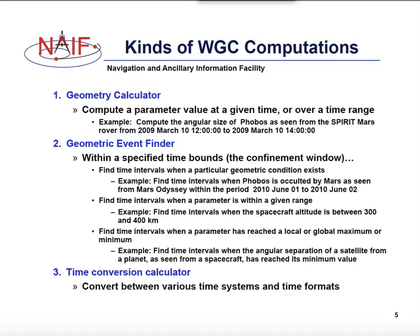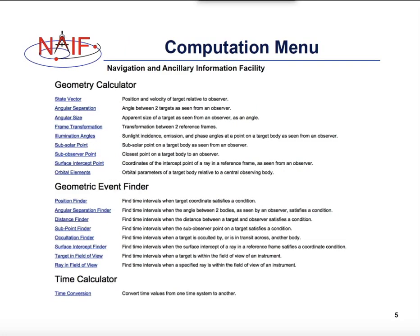WGC performs multiple kinds of computations that fall into three big categories. One is Geometry Calculator, which calculates something at a given time. The other is Geometric Event Finder, which finds time intervals during which a particular geometric condition was met. And the last one is Time Converter.